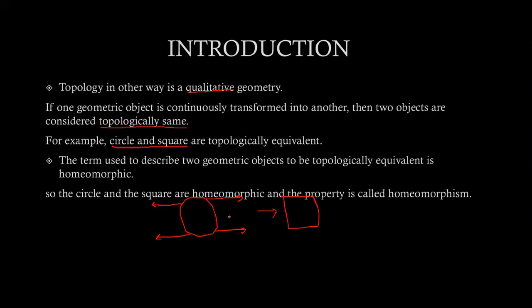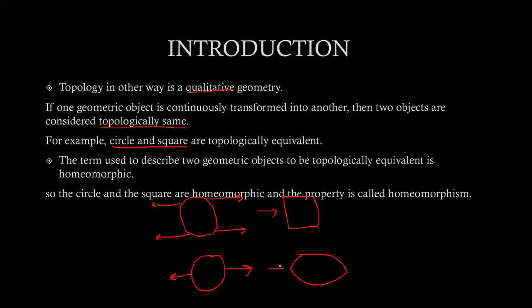Similarly, if we take a circle and an ellipse, then we can say that a circle and an ellipse are both topologically the same. If we take a circle and apply a force here and here, then we can see that it can be transformed into an ellipse. The condition is that the object we are taking must be in the form of a rubber sheet, otherwise it cannot be transformed.